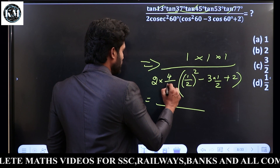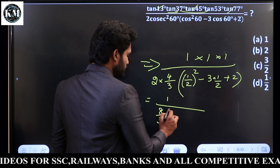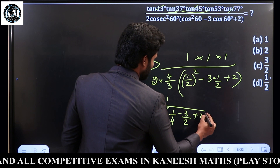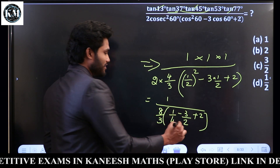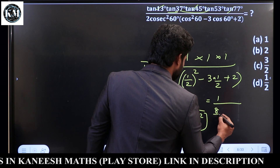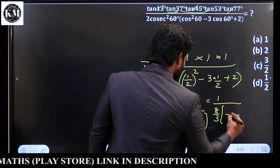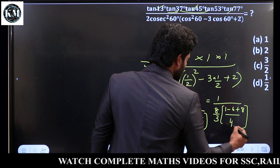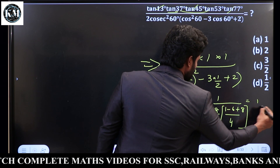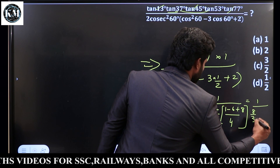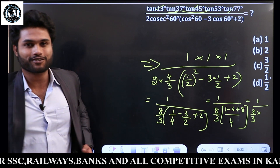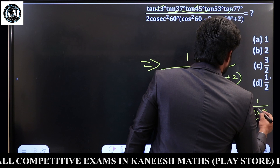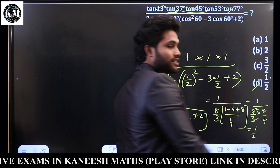So: 1 by 2 minus 3 by 2 plus 2. Taking LCM of 4: expressions compute to 8 by 3. So 3 by 4 cancels down. Cancel the balance: 1 by 2. The answer is Option D.